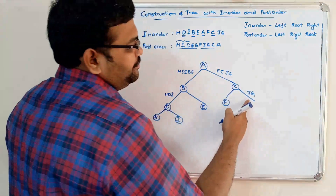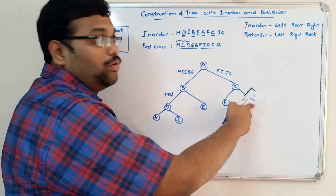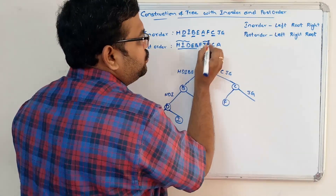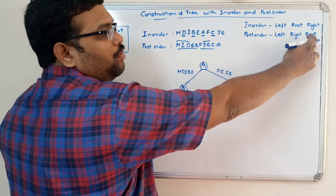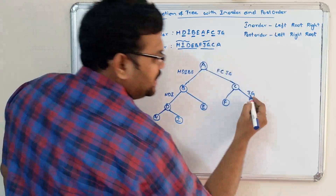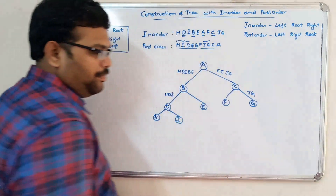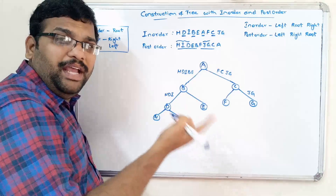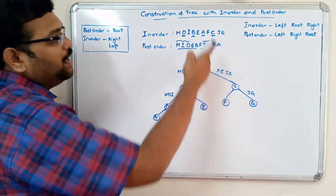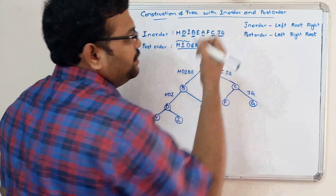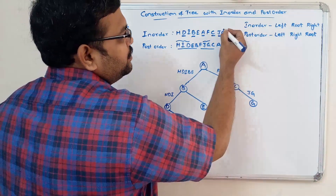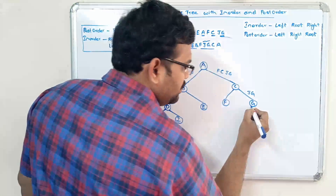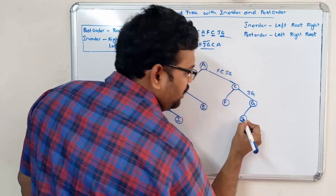For J and G, we need to find the root node. Going with the postorder for J and G — the last element is G, so G is the root node. Now to find the left and right chain, we use the inorder. G is the root node, and J is to the left of G, so J is the left child of G.